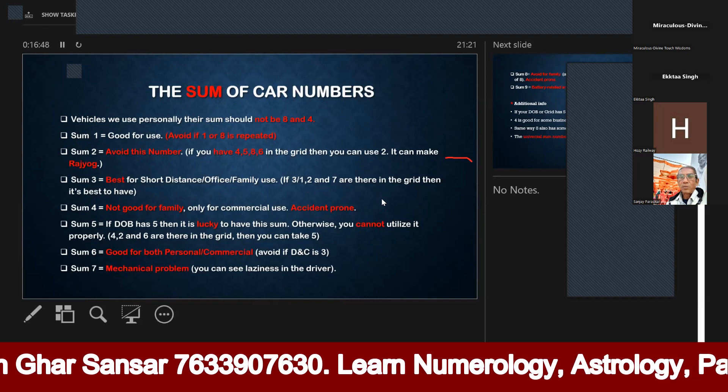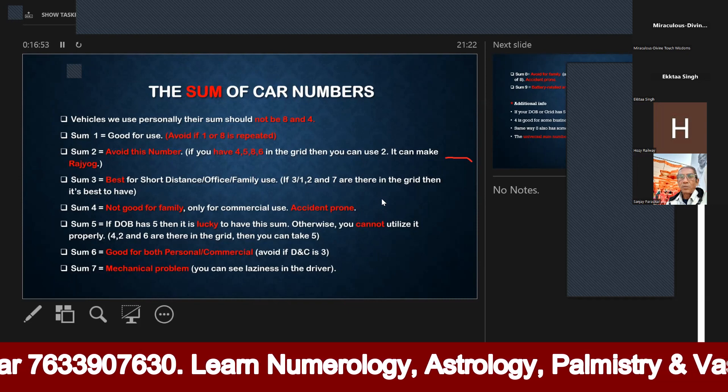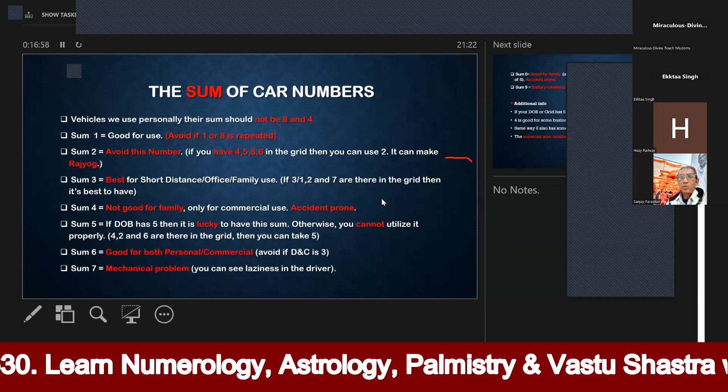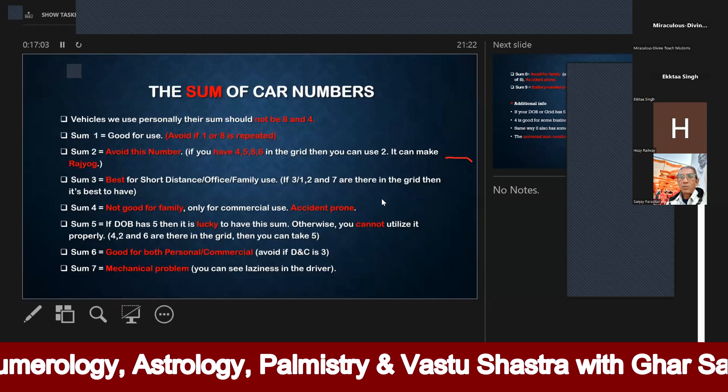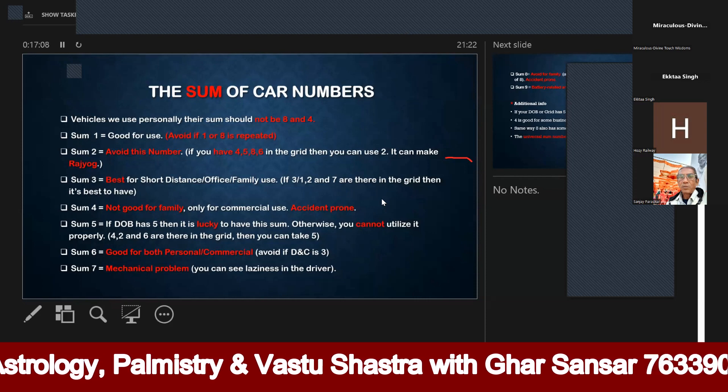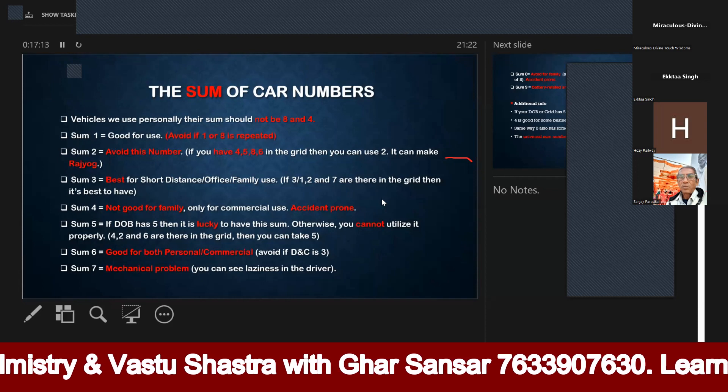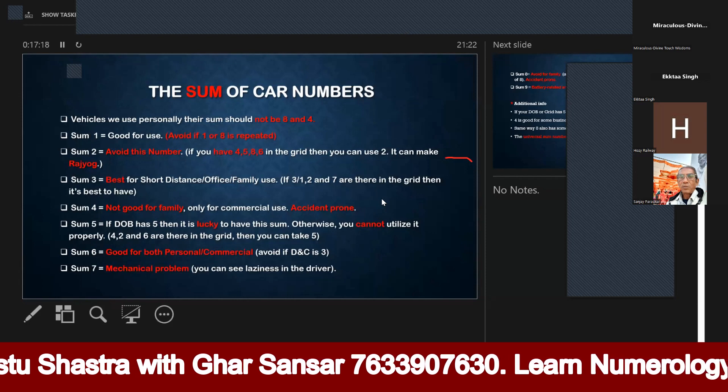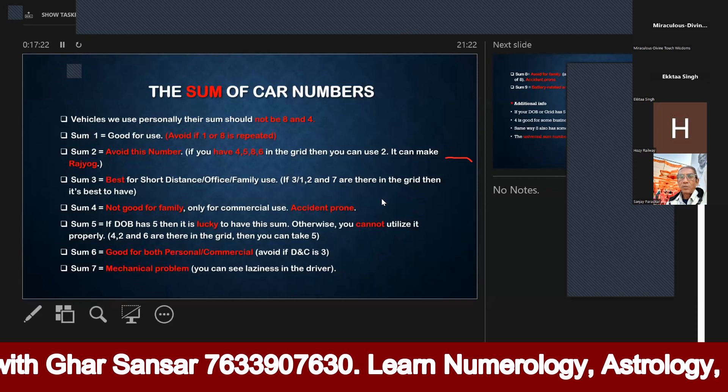For commercial use, we can get sum number 4. When we get sum number 4, it's when our work is related to Rahu - smuggling, goods, or working on black market activities. In such a way, if we get sum 4, he will give you good results. But if you have a car for family use, sum 4 will be accident prone and you will see problems in the vehicle.